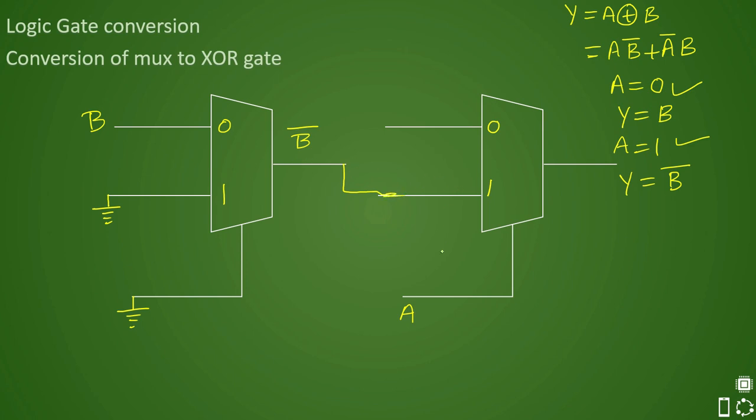So that you will see that if A is one, you are getting B bar. Now if A is zero, you should get a B. So all you need to do is you have to connect this to this. That way, you always get an XOR gate out of this construction. It is pretty easy if you have your fundamentals understood.